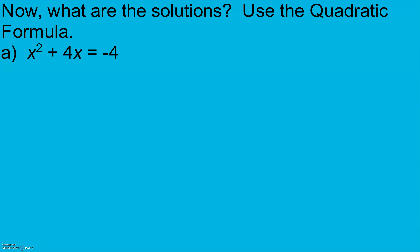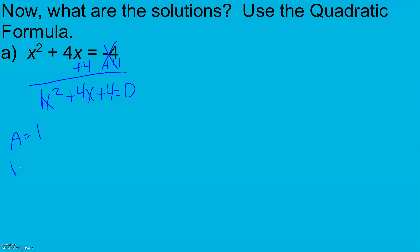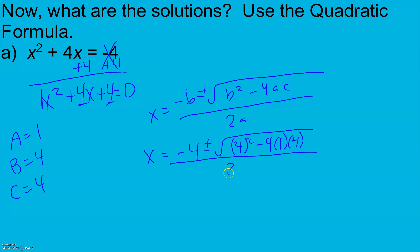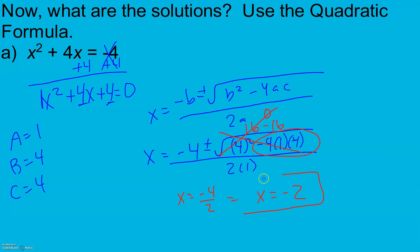Feel free to pause and give this a try. I'm going to add 4 to get the equation set equal to zero — just like when we factor, it has to equal zero first. Now I pick out a = 1, b = 4, and c = 4. Applying the quadratic formula: negative 4 plus or minus the square root of 4² minus 4(1)(4), all over 2(1). Under the radical: 4² = 16, and 4 times 1 times 4 = 16, so 16 minus 16 = 0. The square root disappears, giving negative 4 over 2, so x equals negative 2 — just one solution.